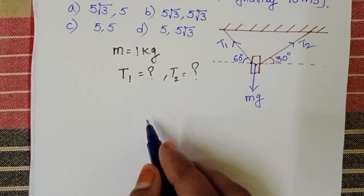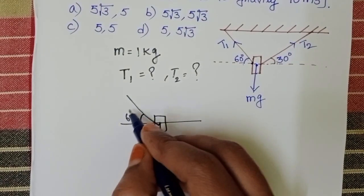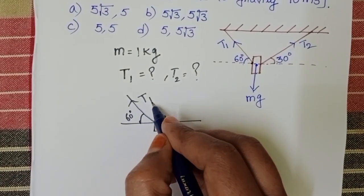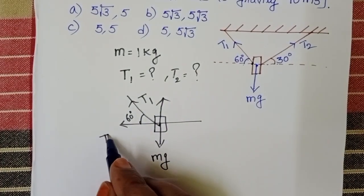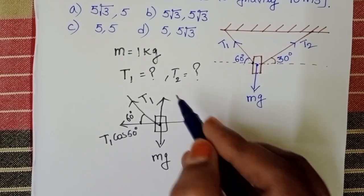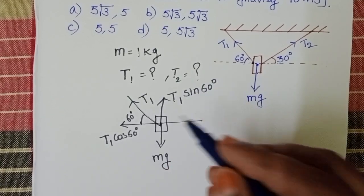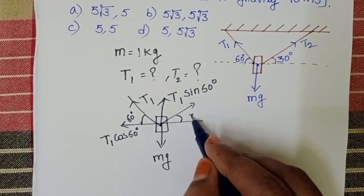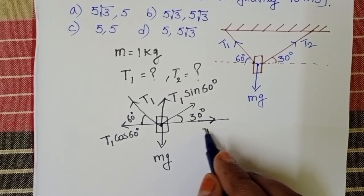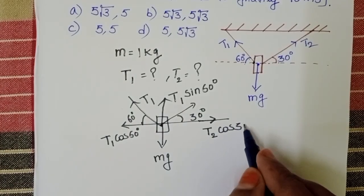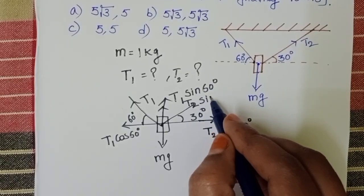Redraw the given diagram. First string makes an angle 60 degrees with the horizontal, tension is T1. The components of T1 along horizontal direction T1 cos 60 and vertical direction T1 sin 60. T2 makes an angle 30 degrees with the horizontal, so the component of T2 along horizontal direction is T2 cos 30 and along vertical direction T2 sin 30 degrees.